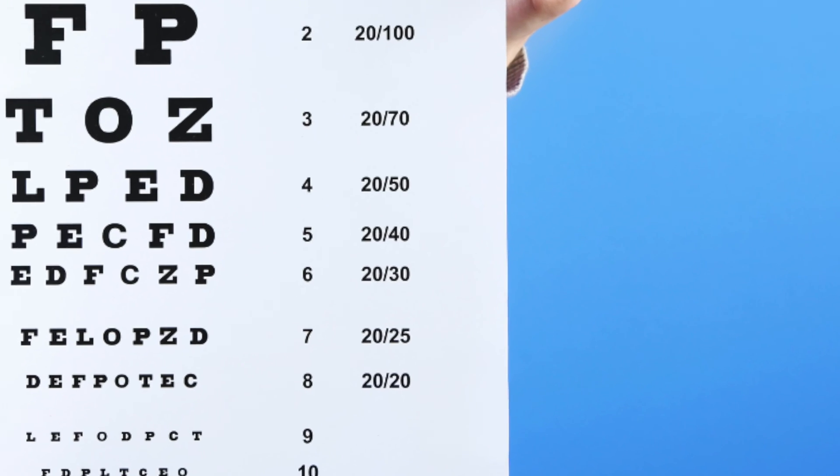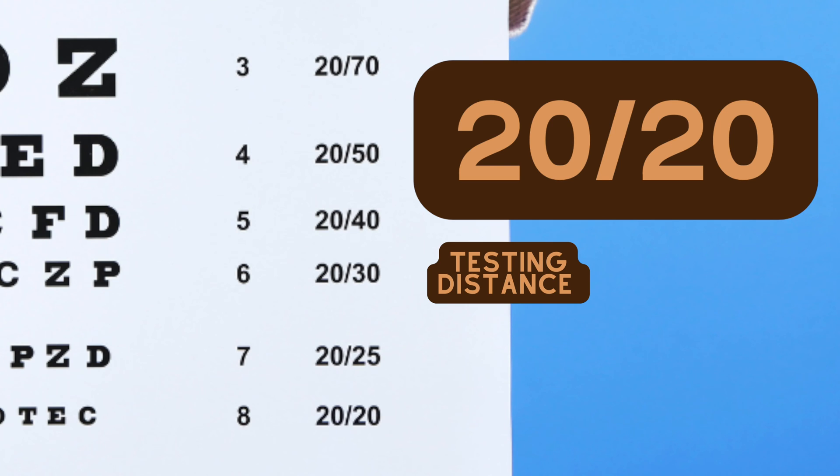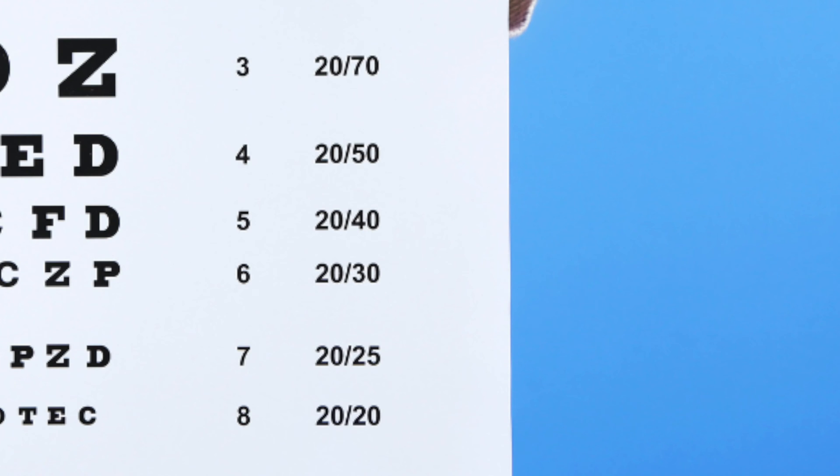To avoid a lot of confusion, it's usually easier to think of the first number as the testing distance and the second number as being your letter size. The smaller the number, the better your resolution.